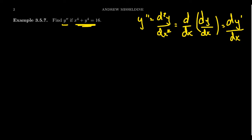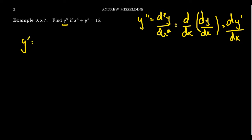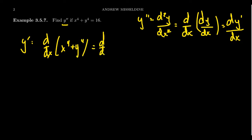When you look at this relationship, x to the fourth plus y to the fourth equals 16, this is not an explicit relationship. We don't have y equals some function f of x. We have x and y co-mingling on the same side of the equation. That's okay — we can compute the derivative implicitly, and we can also take the second derivative implicitly. To find the first derivative, y prime, we take the derivative of both sides: d/dx of x to the fourth plus y to the fourth, equal to d/dx of 16.